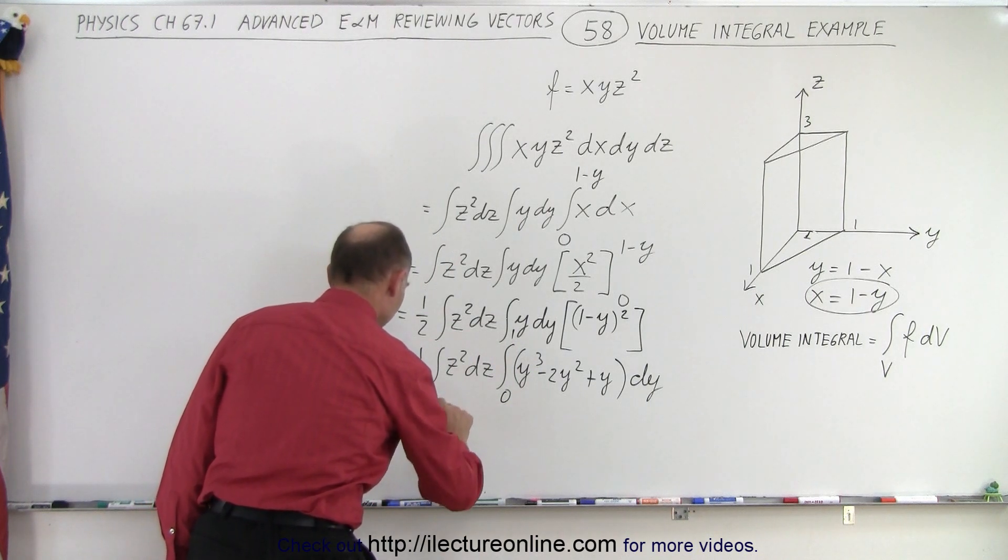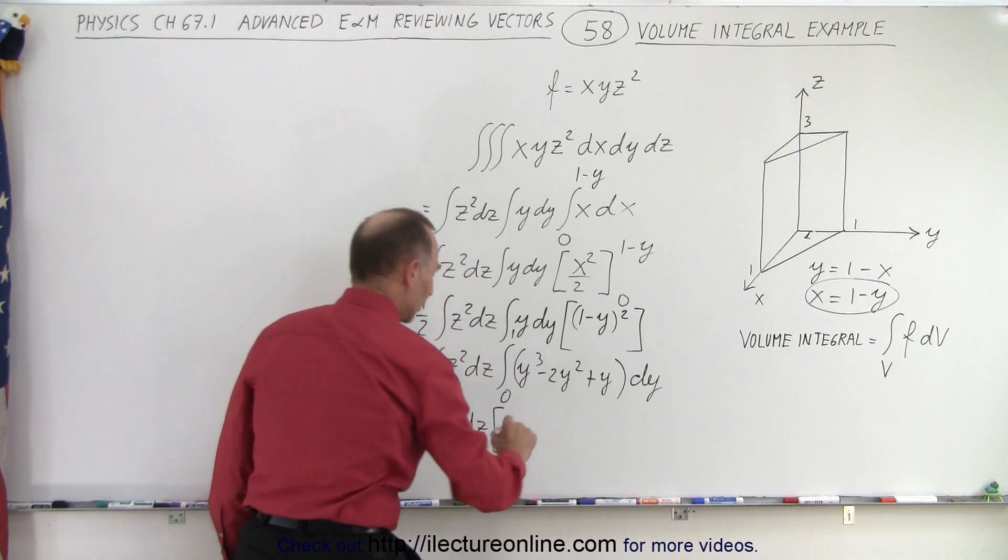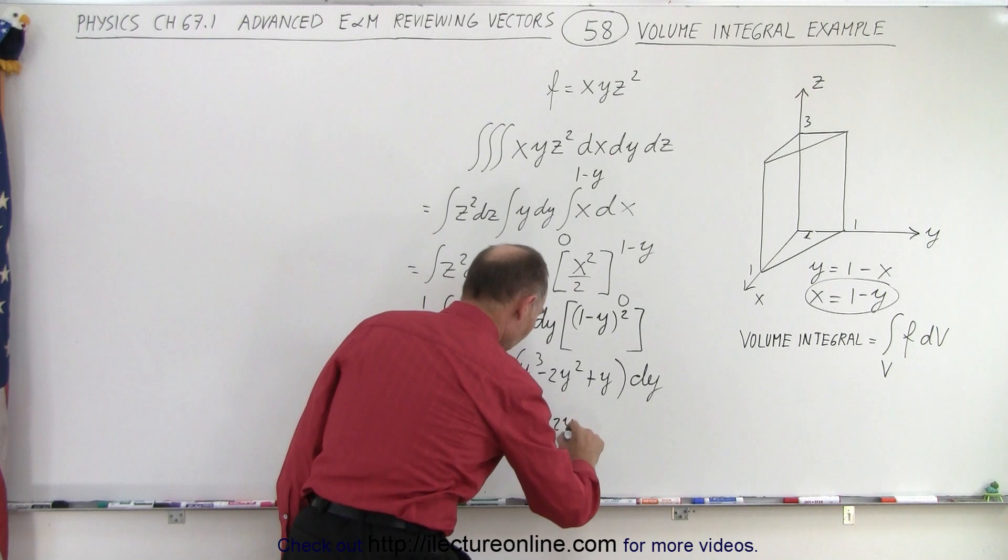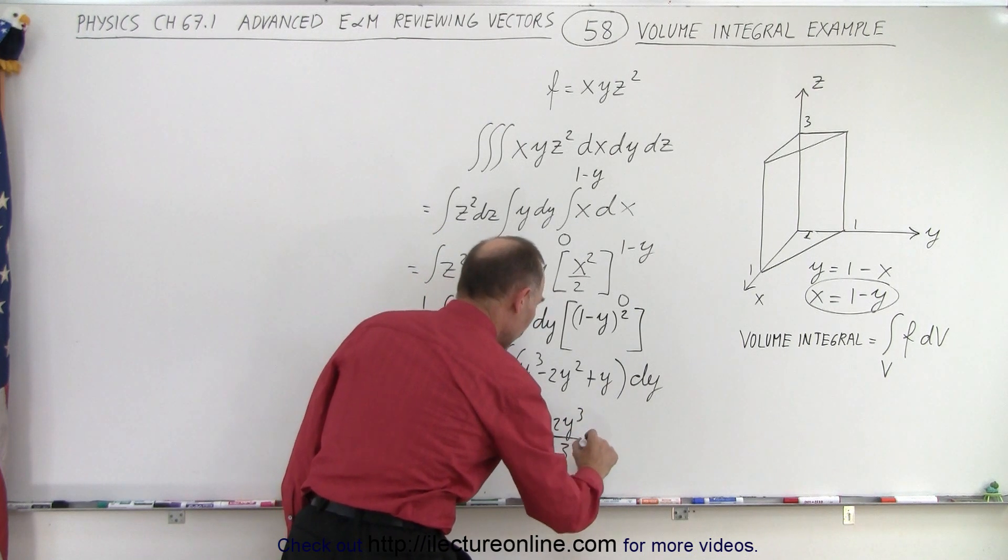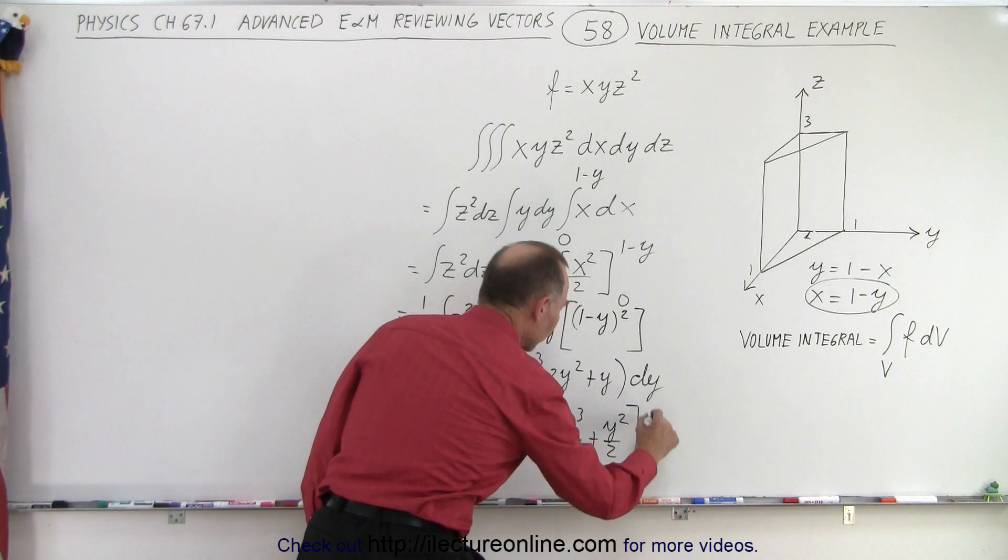So this is equal to 1 half times integral of z squared dz, times, here we get y to the fourth over 4, minus 2y cubed over 3, plus y squared over 2, evaluated from 0 to 1.